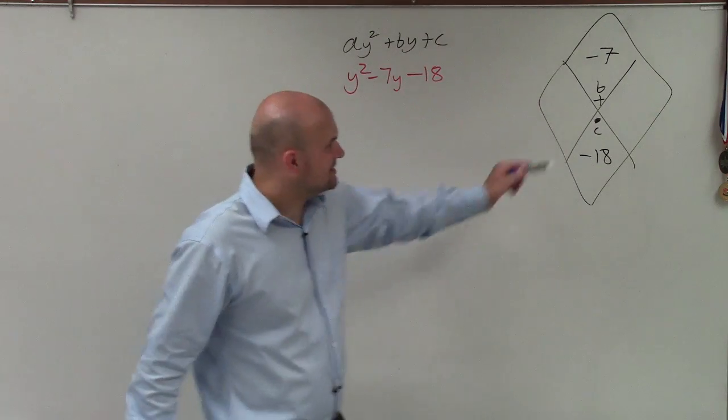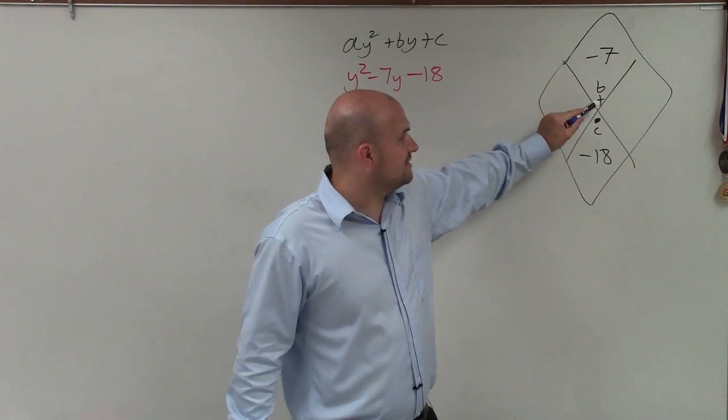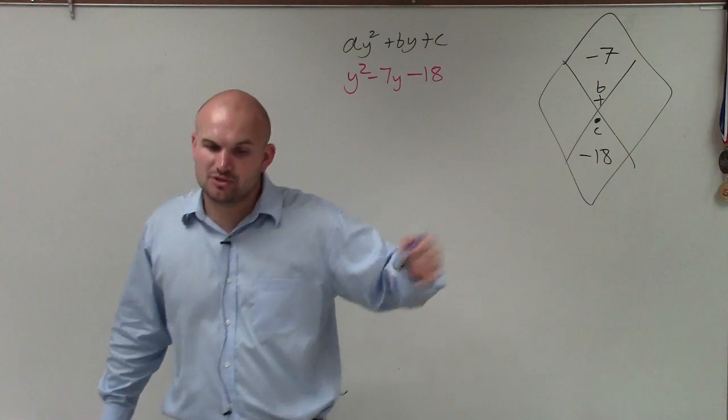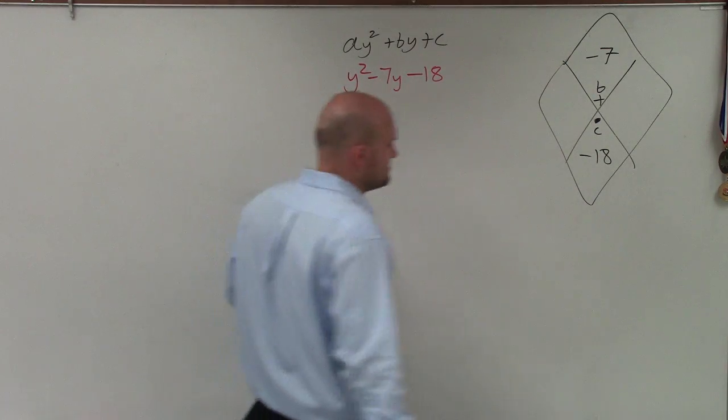So again, I wrote the dot to represent the product, and the plus sign to represent the sum. So two numbers that multiply to give us c, but then add to give us b.